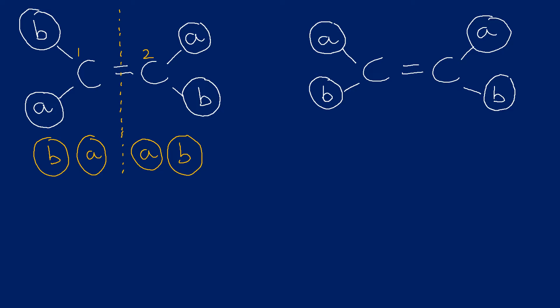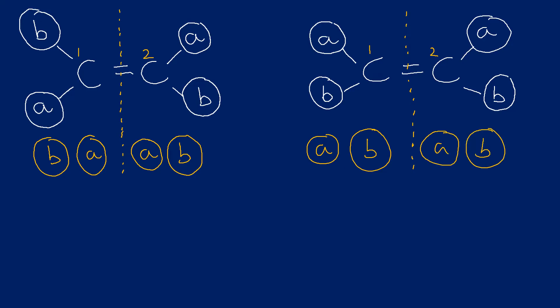Looking at the one on the right - even though they are definitely different alkenes - the carbon on the left has an A and a B, and the carbon on the right also has an A and a B, which are the identical groups. So this is the same: a symmetric alkene.